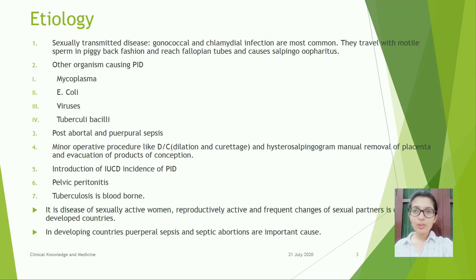Etiology: sexually transmitted disease. Gonococcal and chlamydial infections are most common. They travel with motile sperms in a piggyback fashion and reach the fallopian tubes and cause salpingitis.